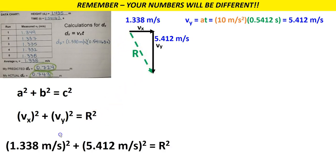So you plug your numbers in: 1.338 meters per second, square the whole thing, plus 5.412 meters per second, square the whole thing, gives us our resultant squared. Now when I add those two numbers together, I get 29.912 meters squared per second squared is equal to our resultant squared.